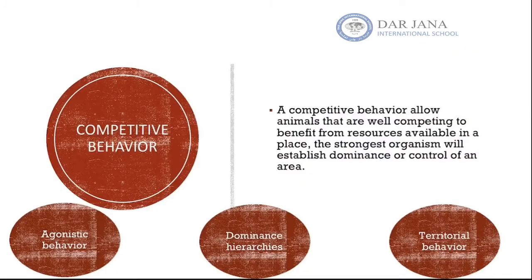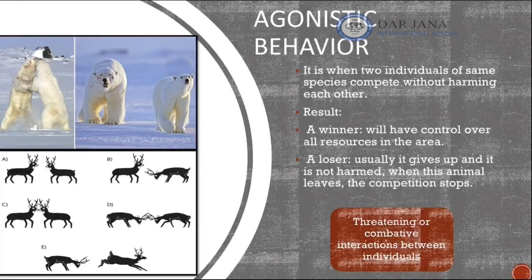We can identify three main types of competitive behavior: agonistic behavior, dominance hierarchies, and territorial behavior. The first type is agonistic behavior, which is similar to the bighorn sheep example we just discussed.